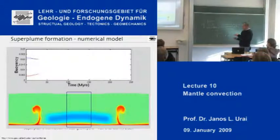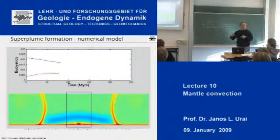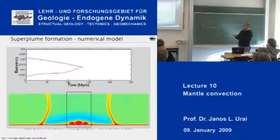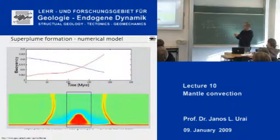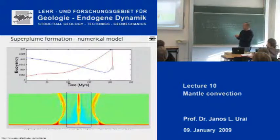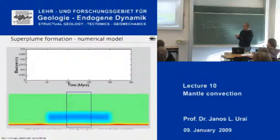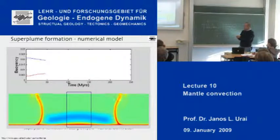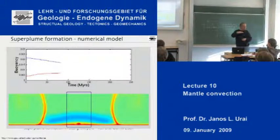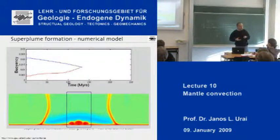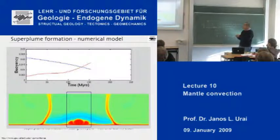This model shows you temperature as an anomaly — the material which is hotter than the surroundings — rising from the bottom of the mantle. So this is from the core-mantle boundary to the top of the mantle. What this model shows is the effect of an old slab which is relatively cold and is lying at the bottom of the mantle, kind of shielding the core-mantle boundary from efficiently losing its heat.